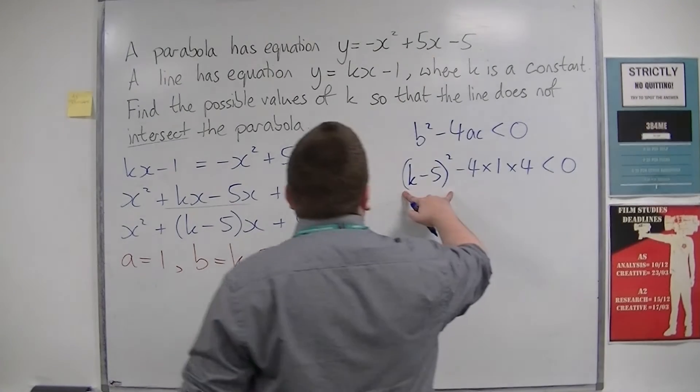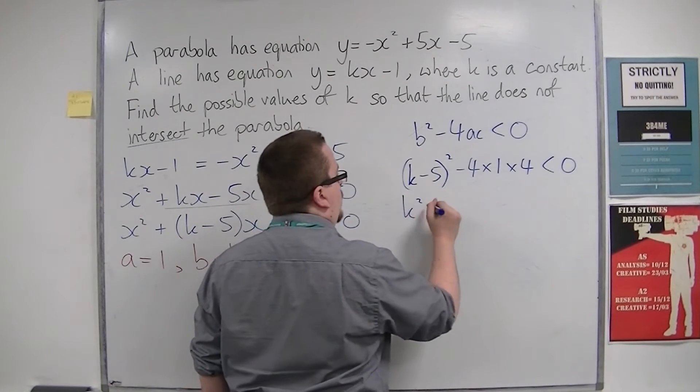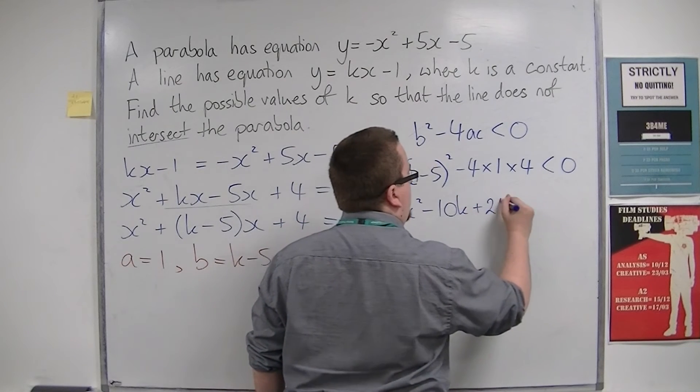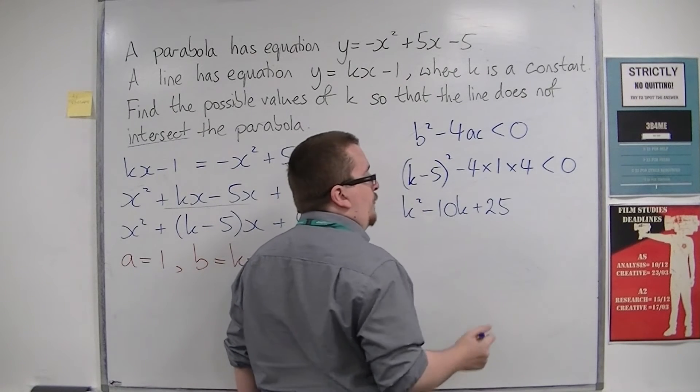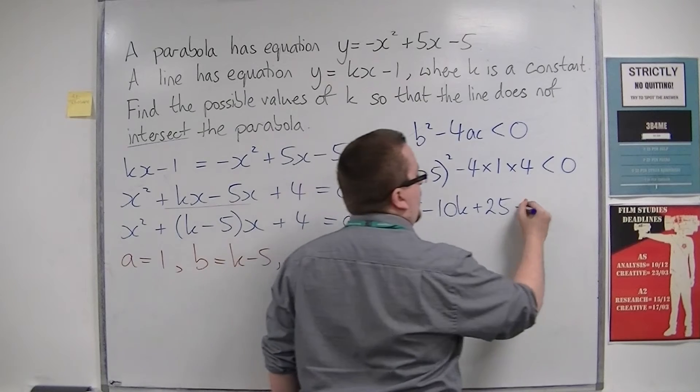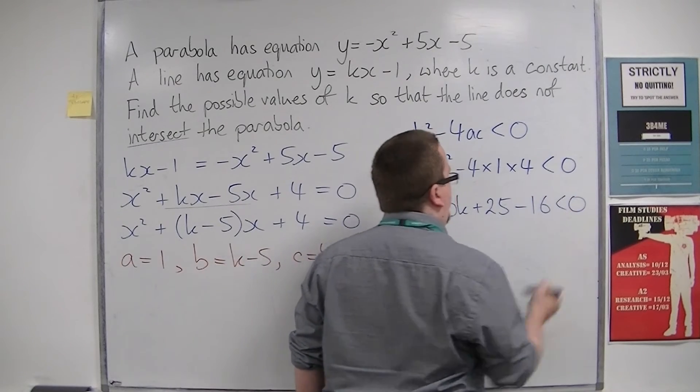So if I expand that bracket, I get k squared minus 10k plus 25. And then I've got this minus 4 times 4, so minus 16, is less than 0.